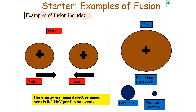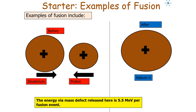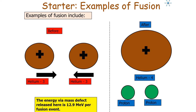Examples of fusion in the universe include two protons coming together to form deuterium, a beta-plus particle (a positron), and an electron neutrino — with 0.4 MeV released by mass defect. Another example is deuterium and a proton fusing together to form helium-3, releasing 5.5 MeV. Finally, two helium-3 nuclei can come together to form helium-4 and 2 protons, releasing 12.9 MeV per fusion event.